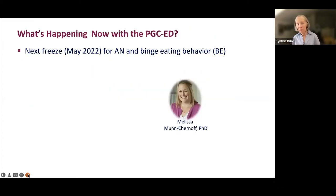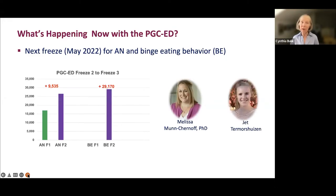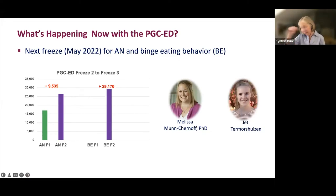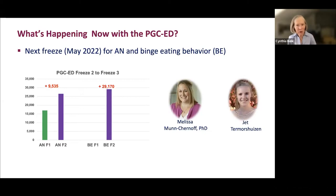We're now in the middle of a second freeze. The UNC side and the Karolinska side are working together to increase our anorexia sample size by about 9,500 cases and to conduct a binge eating GWAS — not a disorder-level GWAS, but a cross-cutting symptom of binge eating that cuts across anorexia, bulimia, and binge eating disorder — to figure out the genetic architecture of that symptom. That should be out next month.